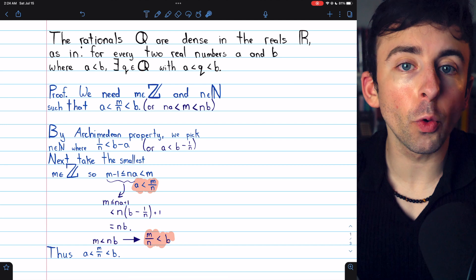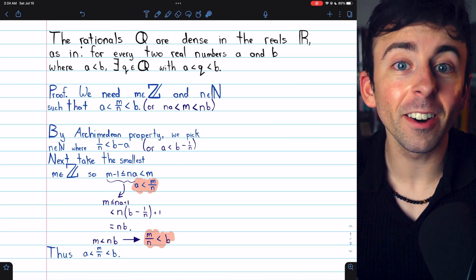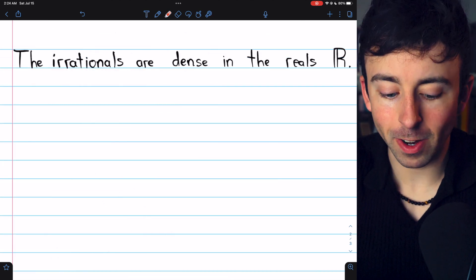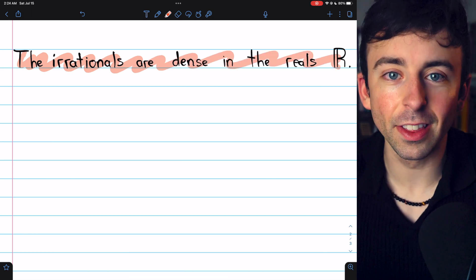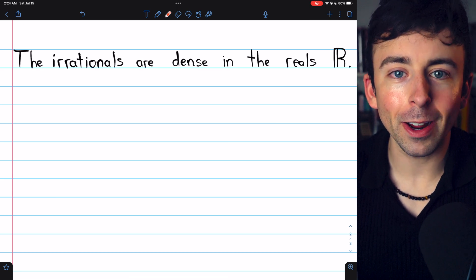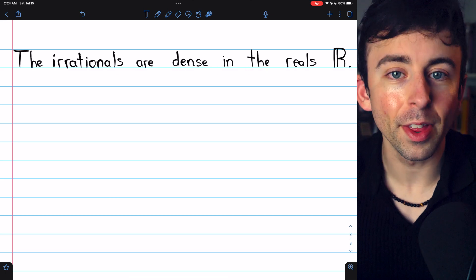So indeed, the rationals are dense in the reals. Given any two distinct real numbers, there is some rational number between them. And here's something you might be curious about. The irrationals are also dense in the reals. This is actually a corollary. We'll prove it next time. But you can give it a try yourself using our previously proven result to prove this one.